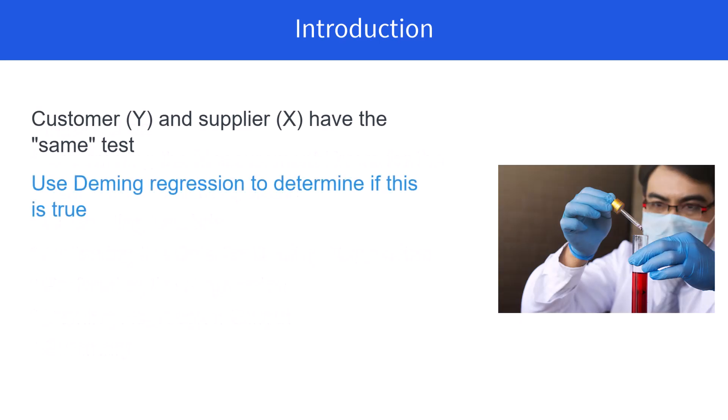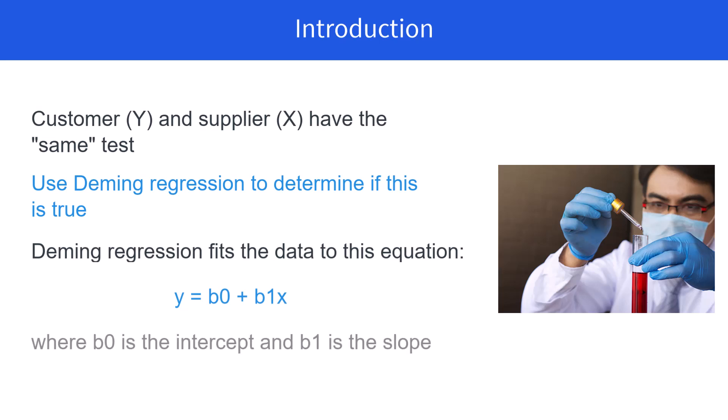So customer and supplier have the same test. We're going to use Deming regression to see if it's true. It fits the equation Y equals B0 plus B1X. B0 is the intercept, B1 is the slope.